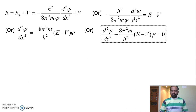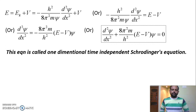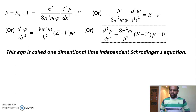This equation is called the one-dimensional time-independent Schrödinger equation. It is one-dimensional because the particle in the system is traveling along the x-direction, so only one space variable is considered.